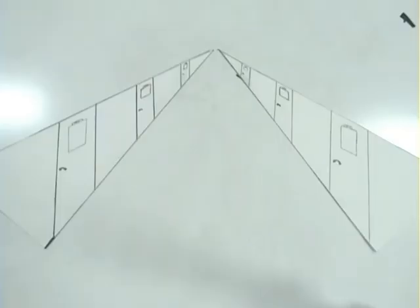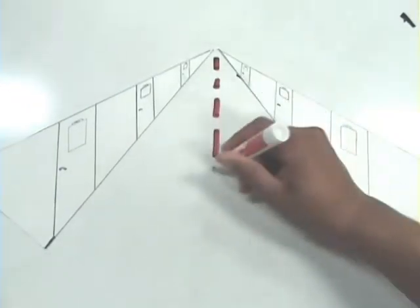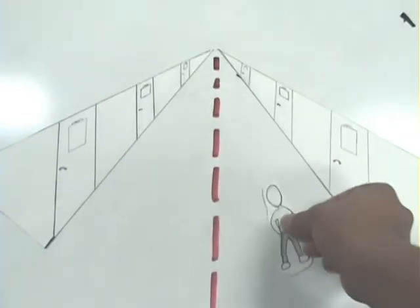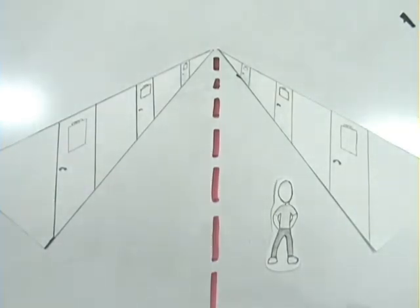To start out, think of the hallway like a road. There is an imaginary dotted line down the center. Just like when you are driving, you stay to the right.